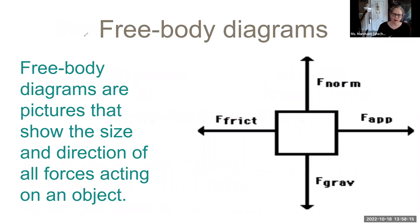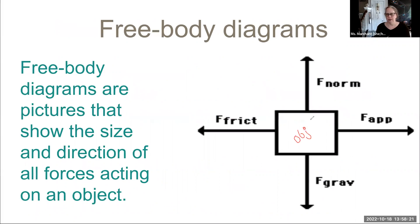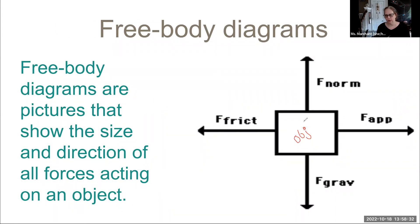These things are called free body diagrams, and all that means is that you're going to have one object that you are describing the forces on. So we freed one object to draw a diagram about it. We're going to free one object, so we're only talking about one object and its specific forces that are acting upon it.